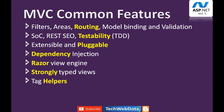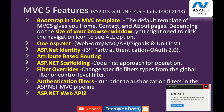The most common features of MVC include filters, areas, routing, model binding, and validation. Other key features are: separation of concern, REST and SEO-based URIs, testability supporting test-driven development, extensible and pluggable views that can be reused anywhere in the application, dependency injection, the Razor view engine for writing C# and HTML in the same view, strongly-typed views, and tag helpers which we will discuss in detail.